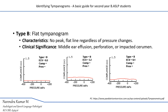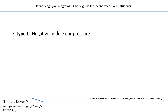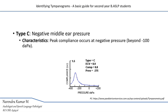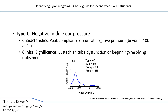At times, when the probe is placed against the ear canal wall, we will also get a similar type of flat tympanogram. Type C tympanogram has negative middle ear pressure, so the peak is shifted towards the negative pressure side. It is characterized by peak compliance occurring at a pressure beyond minus 100 decapascals. Compliance may be normal or reduced due to restricted movement of the tympanic membrane. It indicates Eustachian tube dysfunction or otitis media at the beginning or resolving stage.